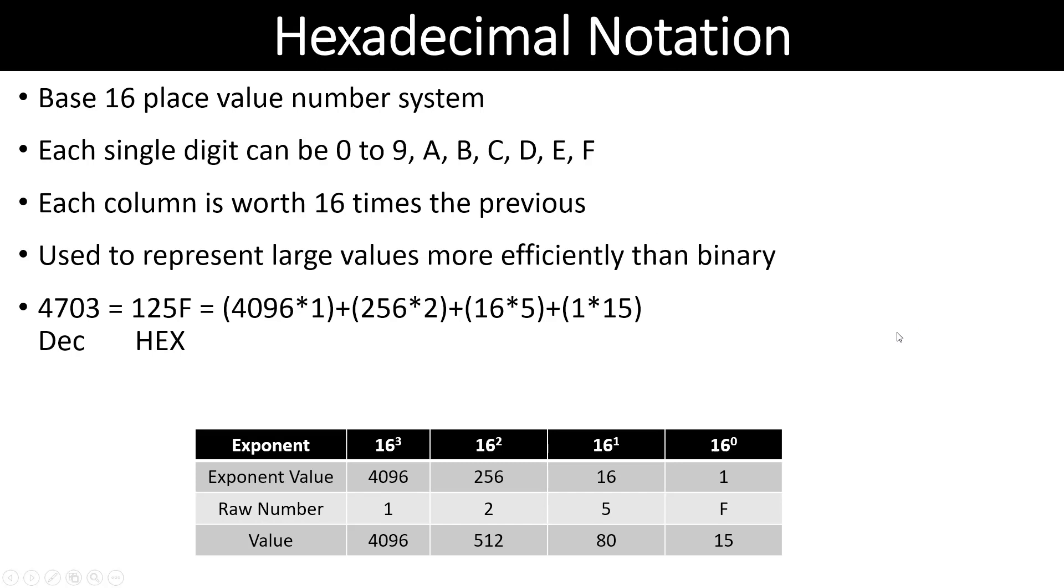Let's look at hexadecimal. It's base 16, and after we get to the number 9, the next number is A, B, C, D, E, F. And F is going to be 15. So 10, 11, 12, 13, 14, and 15 are represented by letters.